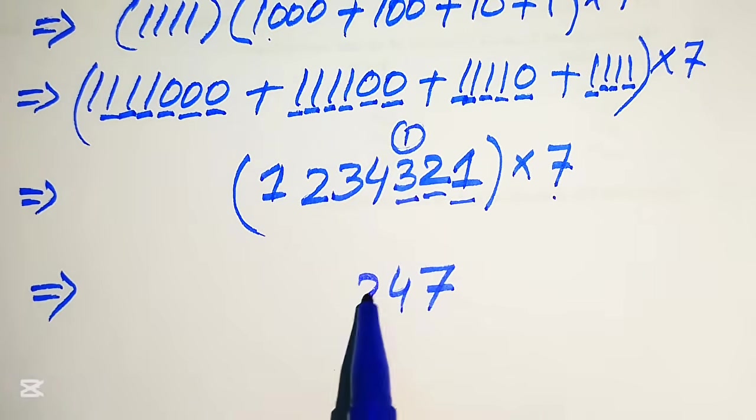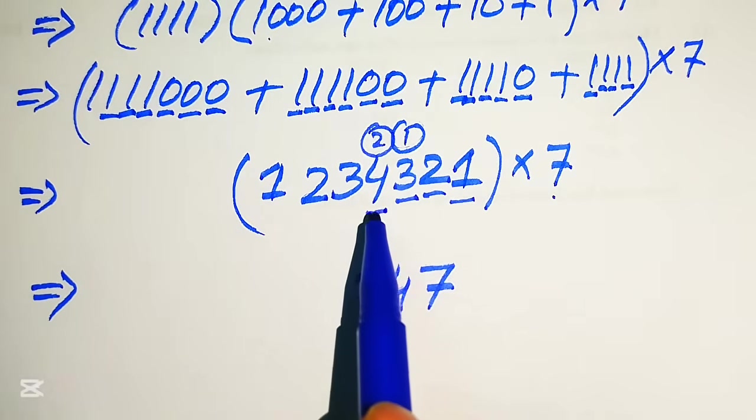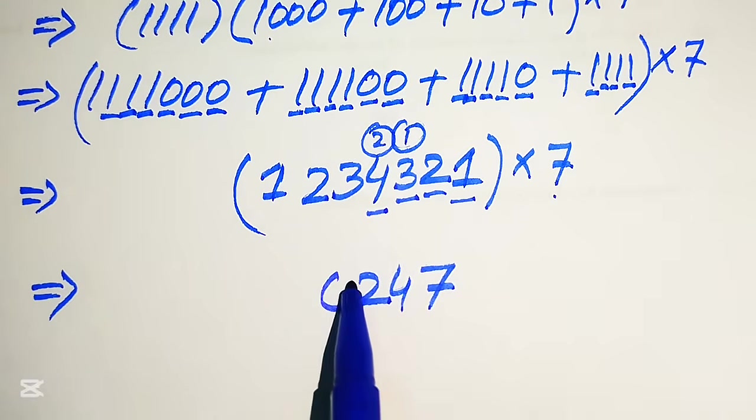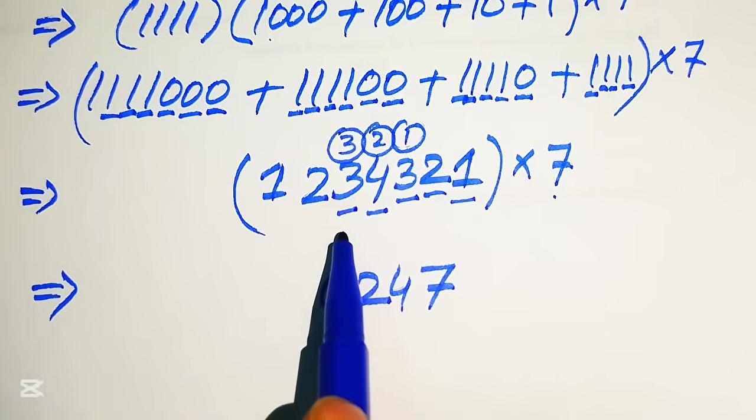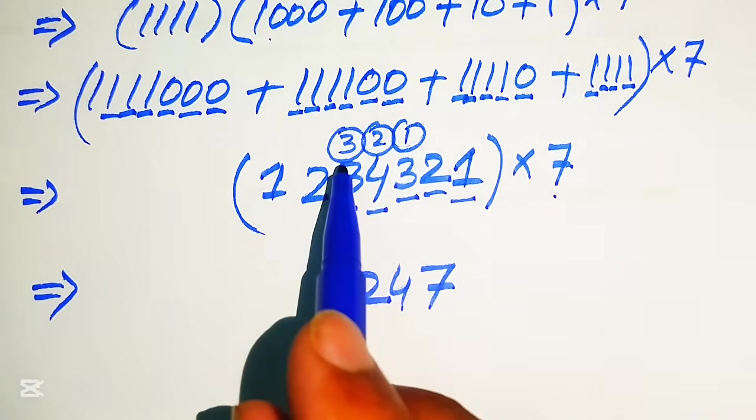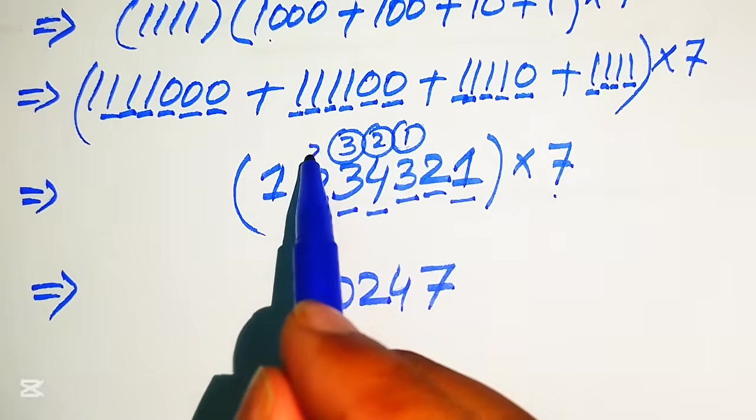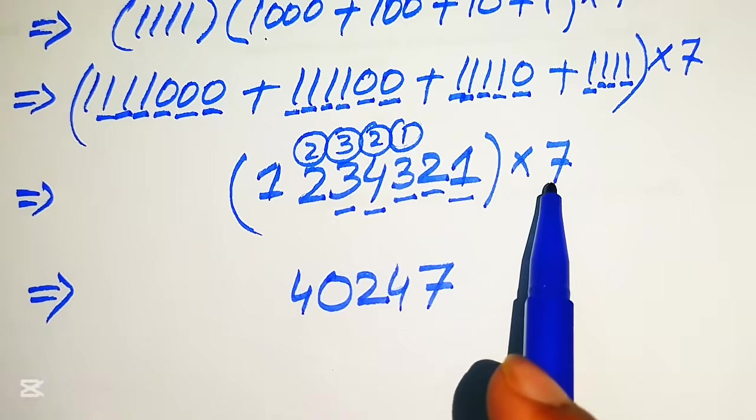This 7 times of 3 becomes 21. 21 plus 1 is 22. We write 2 and carry 2. 7 4s are 28. 28 plus 2 becomes 30. We write 0 and carry 3. This 7 3s are 21. 21 plus 3 equals to 24. We write 4 and carry 2.